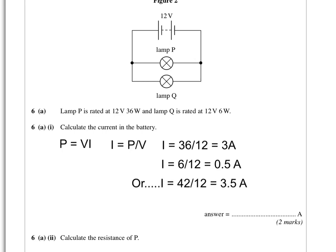Alternatively, if we added the power, 6 plus 36, that's 42 watts for both bulbs combined. So we can do 42 divided by 12, and that will also give us 3 and a half amps. Whichever way you do it, you'll get an answer of 3 and a half amps.